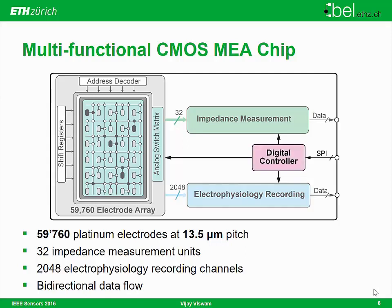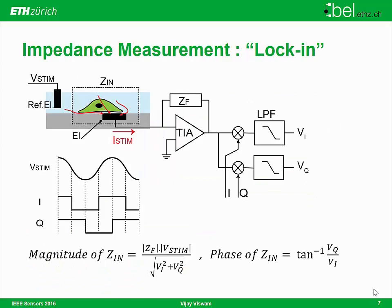There is also a digital controller which enables bidirectional communication from the chip to the outside. The measurement method we use for impedance measurement is the Lock-in Principle, where we apply a sinusoidal voltage to the stimulator. Since the current depends on the cell impedances, a transimpedance amplifier converts this current to a voltage. This voltage is multiplied by in-phase and quadrature reference sequences, and from these two channels we can measure the magnitude and phase of the impedances.